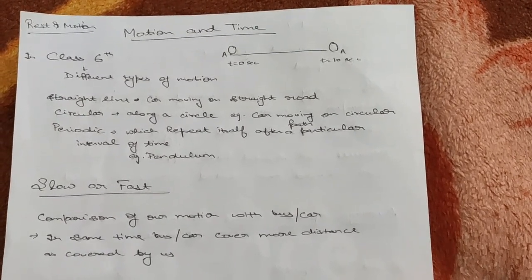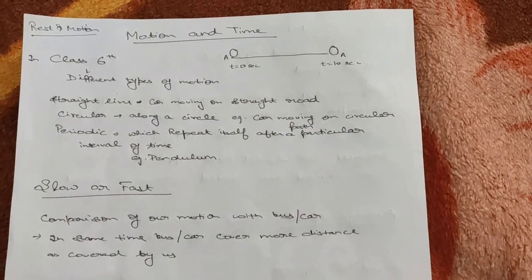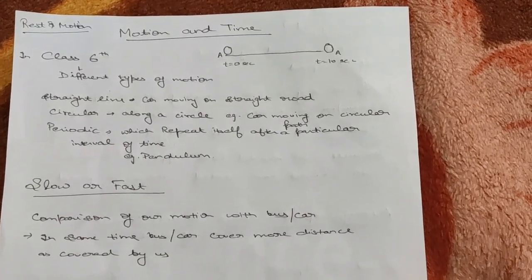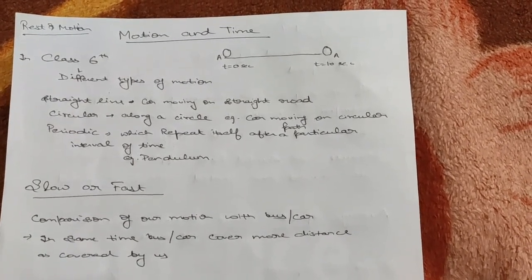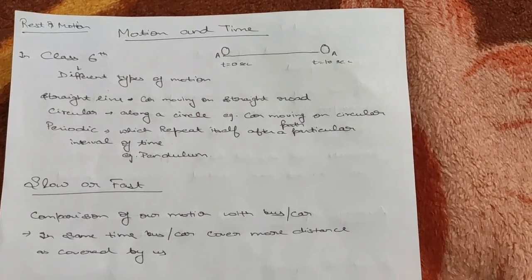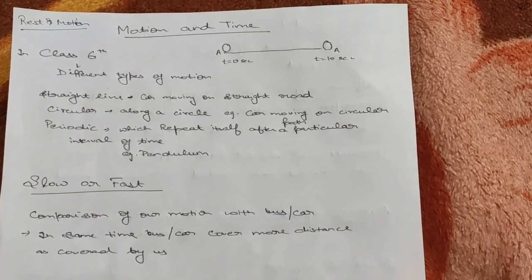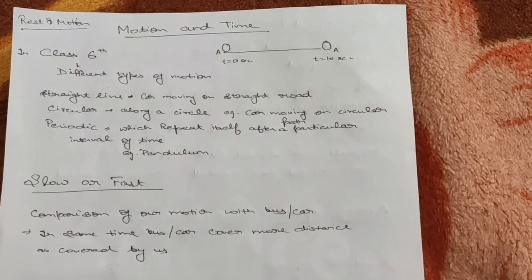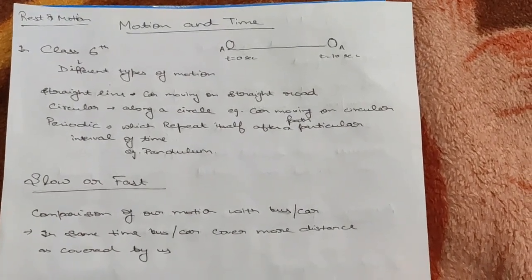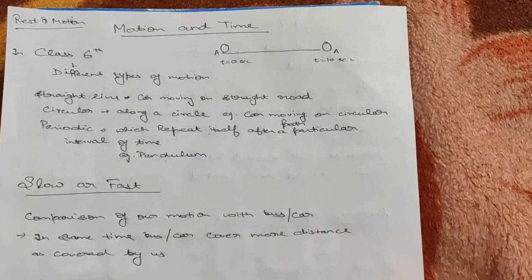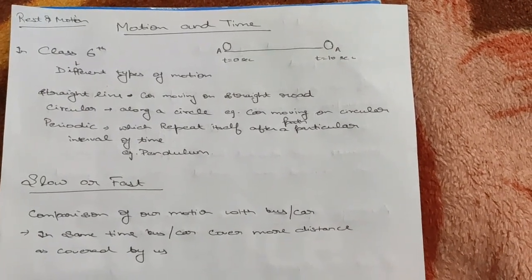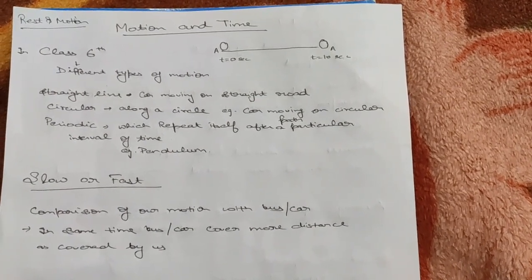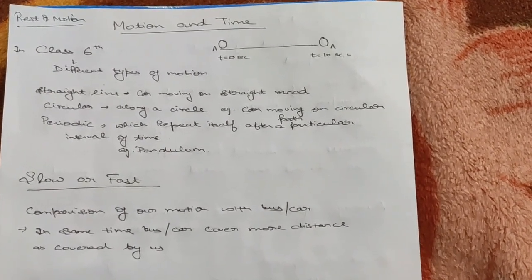It has changed its position with respect to time, so it is doing motion. But if at t=0 and at t=10 the object A is at the same place, then we can easily say that object A is at rest. We can simply differentiate between rest and motion: when an object does not change its position with respect to time it is at rest, and when it changes its position with respect to time it is in motion.